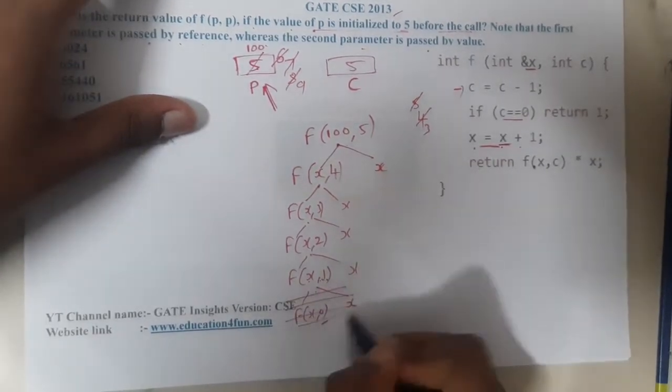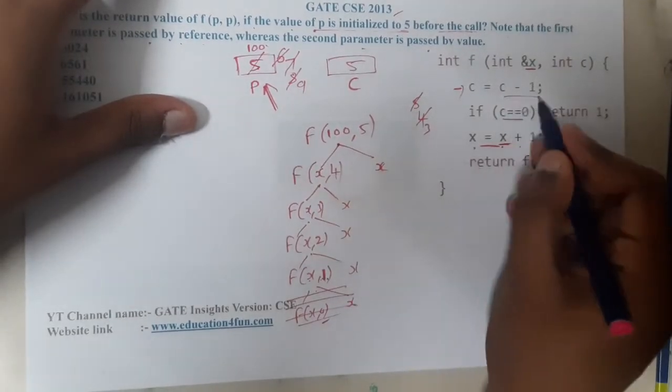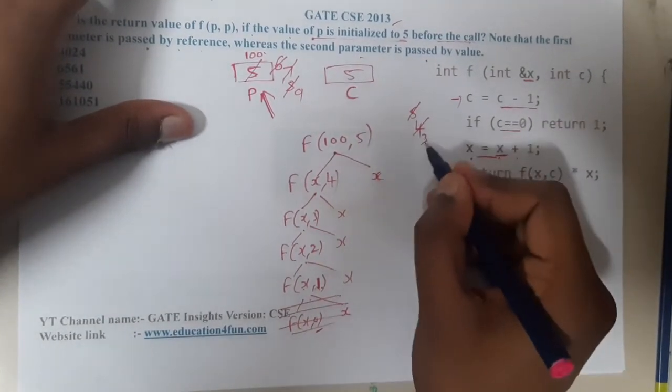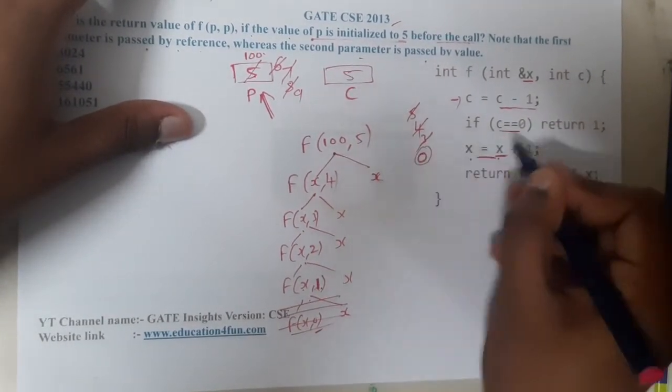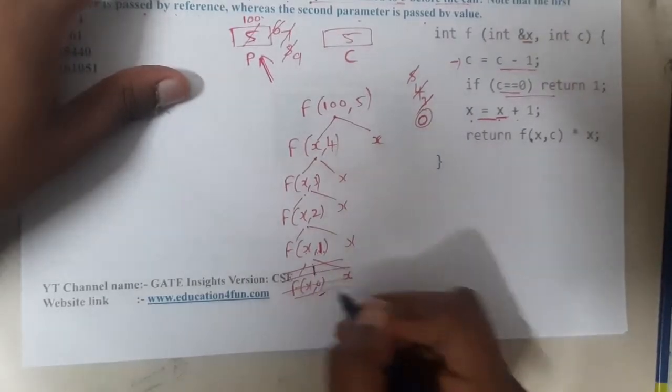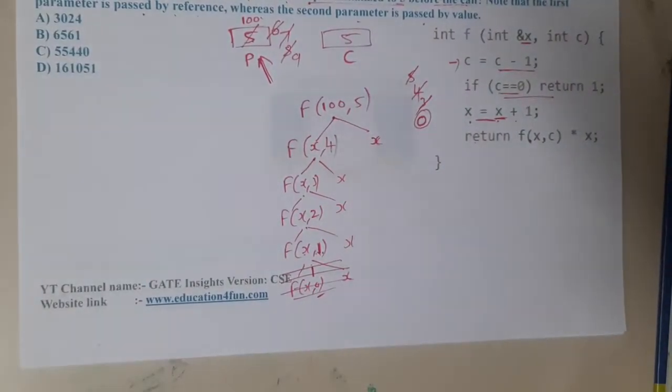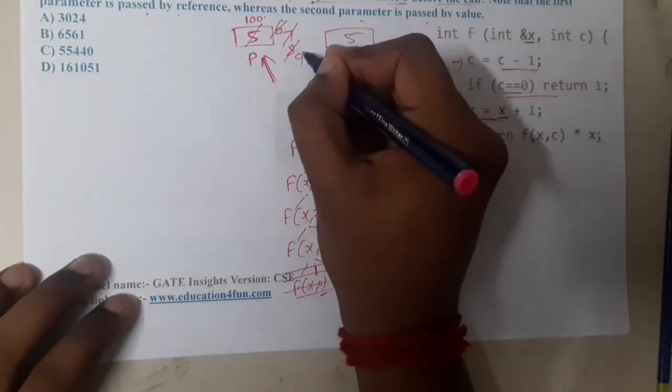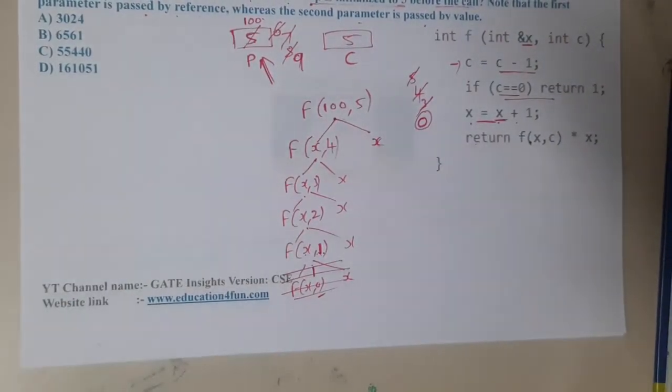Will it go till here? When x equals 1, it will decrement and check if c equals 0, then return 1. Basically here you will return 1. The value will go up to maximum 9.